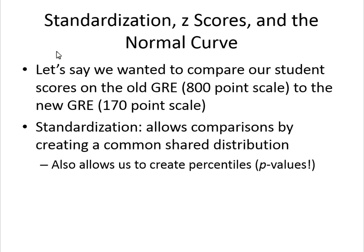We're investigating master's students — who we're going to accept into our program. We used to have a problem where we had students who had the old GRE on the 800-point scale and people who had the new GRE on the 170-point scale. It's kind of hard to compare those two because they're on very different scales. Not so much anymore — mostly people haven't taken the old one. The solution is to standardize, which allows us to compare by creating a common distribution and putting everything on the same scale.